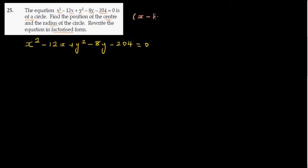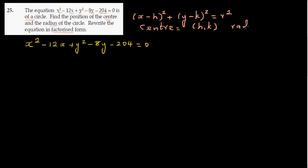We start by writing the equation: x squared minus 12x plus y squared minus 8y minus 204 equals zero. To write this in standard form, recall that the standard form of a circle is x minus h, whole squared, plus y minus k, whole squared, equals r squared — with center h comma k and radius r. We will convert the given equation into this form.